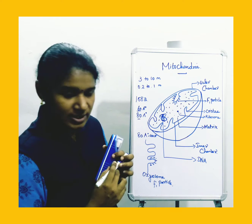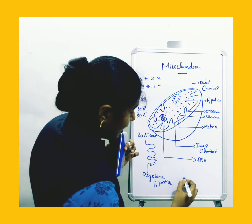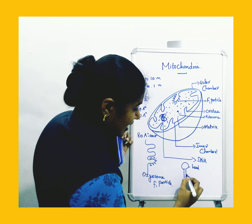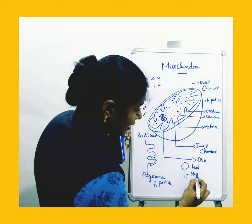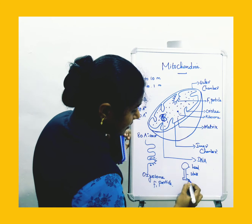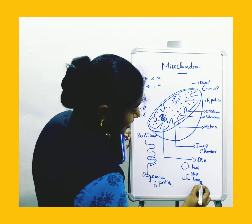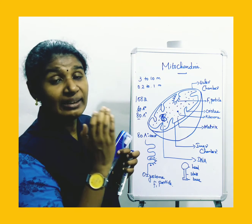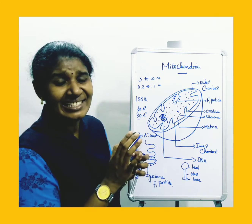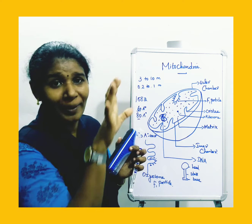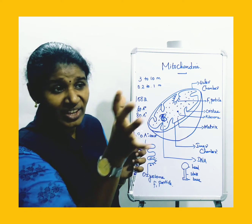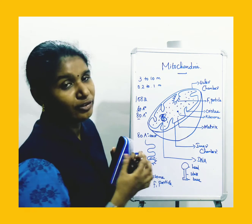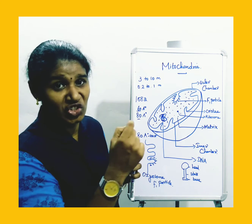The F1 particle individually contains a head, a stalk, and a base. This is the structure of the F1 particle, present in the inner mitochondrial membrane. It resembles a tennis racket shape and is fully occupied in the inner mitochondrial membrane as finger-like projections — this is also called the electron transport chain.